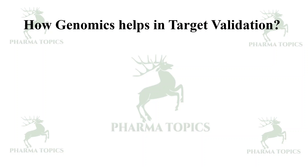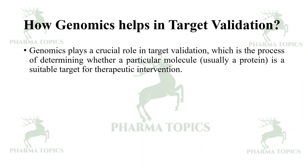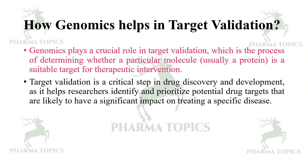Genomics plays a crucial role in target validation, which is the process of determining whether a particular molecule — usually a protein — is a suitable target for therapeutic intervention. Target validation is a critical step in drug discovery and development, helping researchers identify and prioritize potential drug targets that are likely to have a significant impact on treating a specific disease.